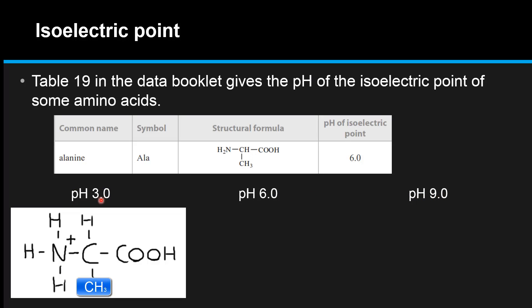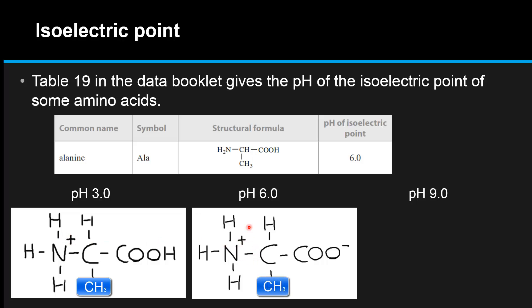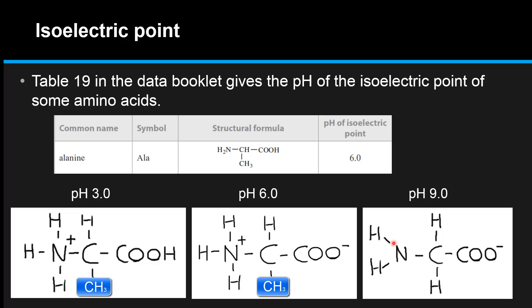At pH 3.0 which is below the pH of the isoelectric point the amino acid is positively charged. At pH 6 which is the isoelectric point there is no overall charge on the amino acid because it is the zwitterion. And at pH 9 the charge on the amino acid is negative because pH 9 is above the pH of the isoelectric point.